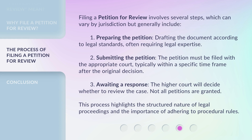Filing a petition for review involves several steps, which can vary by jurisdiction, but generally include: 1. Preparing the petition — drafting the document according to legal standards, often requiring legal expertise. 2. Submitting the petition — it must be filed with the appropriate court, typically within a specific time frame after the original decision. 3. Awaiting a response — the higher court will decide whether to review the case; not all petitions are granted. This process highlights the structured nature of legal proceedings and the importance of adhering to procedural rules.